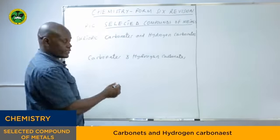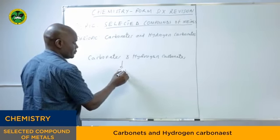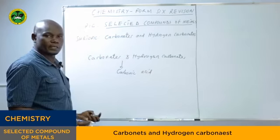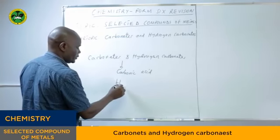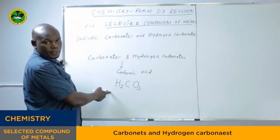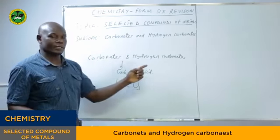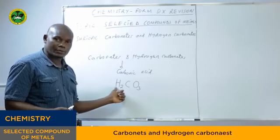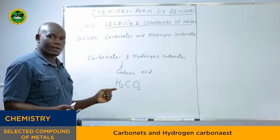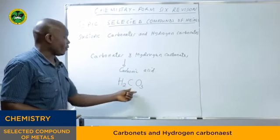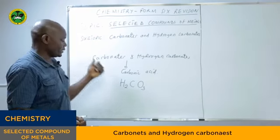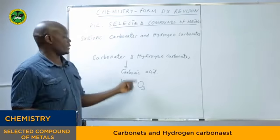Carbonates and hydrogen carbonates are derivatives of carbonic acid. As we know, carbonic acid has the formula H₂CO₃. When one hydrogen atom is replaced by a metal, the compound is known as hydrogen carbonate. But if two hydrogen atoms are replaced by a metal, it is known as carbonate.